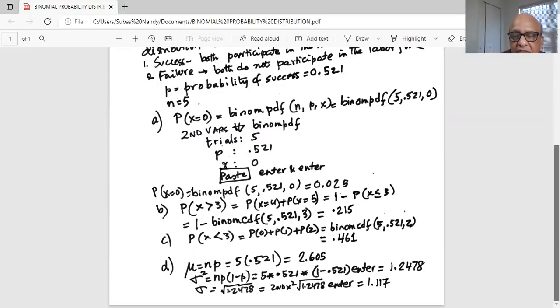Now that is the variance. The standard deviation is the square root of the variance. So it is square root. So in your calculator, you do second x squared, which gives you the square root. Inside the square root, you type 1.2478 and hit enter. And the answer is 1.117. That is the standard deviation, which is sigma. The variance was 1.2478.